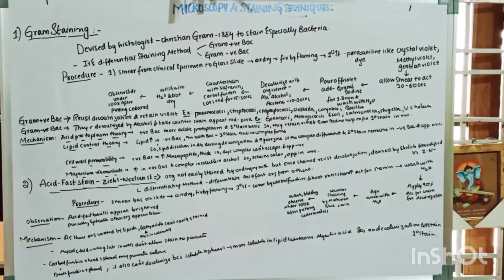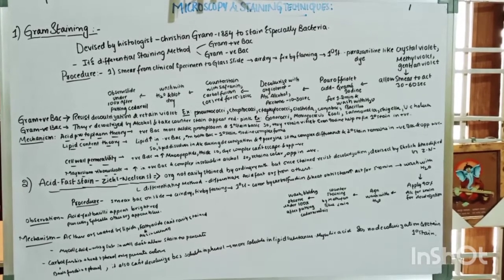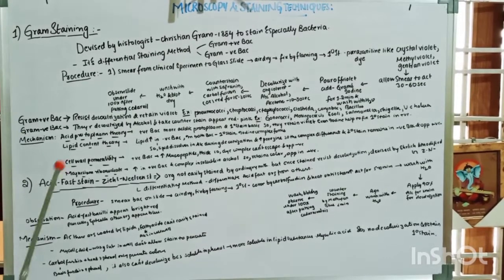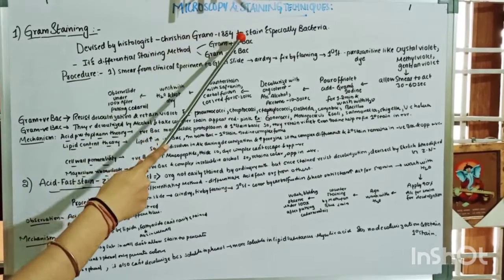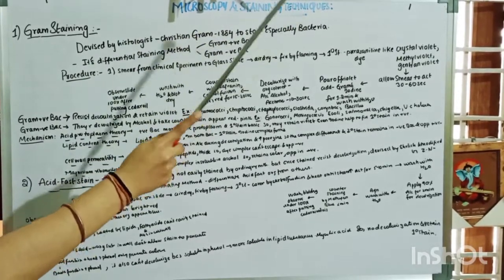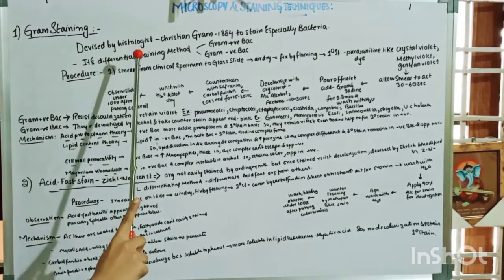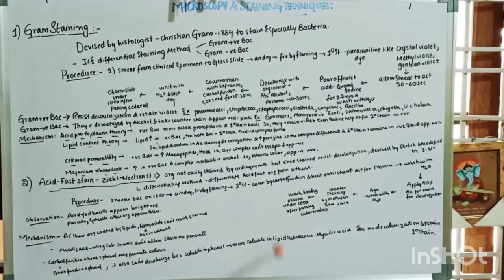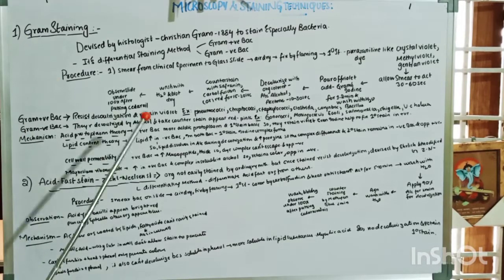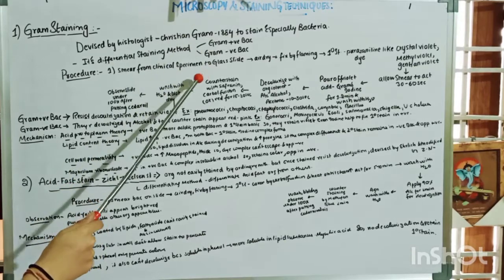Gram staining is used to differentiate bacteria. It was devised by the histologist Christian Gram in 1884. It is a differential staining method that divides bacteria into gram-positive and gram-negative. The procedure begins by smearing bacteria from a clinical specimen onto a glass slide, allowing it to air dry, and fixing it by gently flaming it over a Bunsen burner.